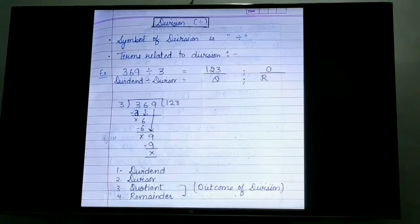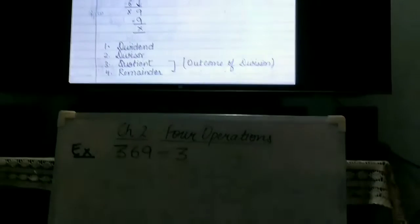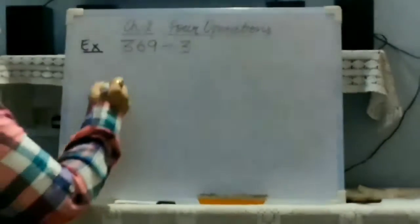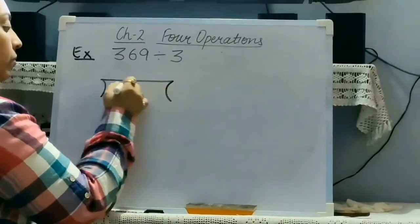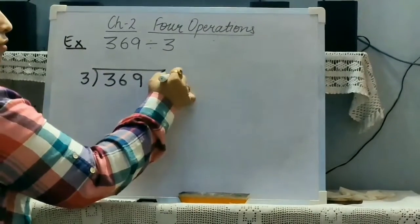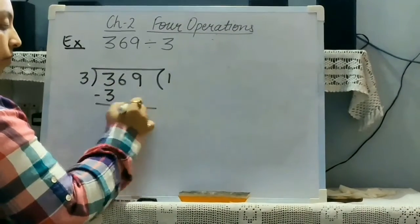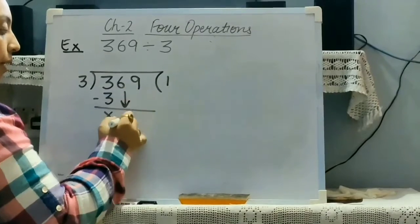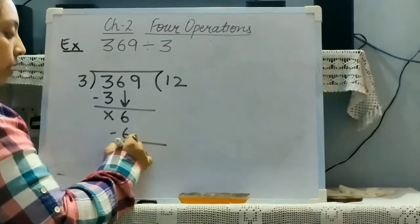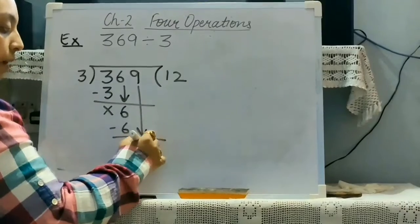Now we will take one example in which we will divide 369 by 3. 3 threes are 3. 6 will be copied down. 3 twos are 6. Nothing is left. 9 will be copied down.